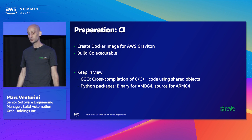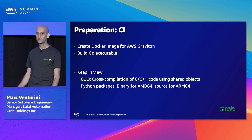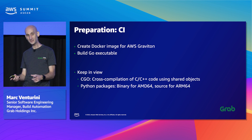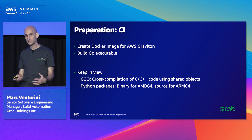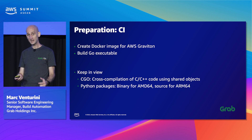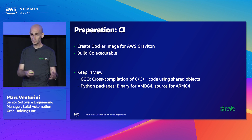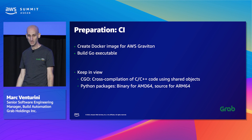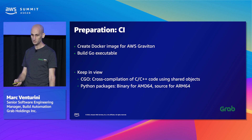Another thing we discovered: we had one Python package that was delivered as a binary for AMD but as source code for ARM. That means if you don't have a toolchain installed in your Docker image — which typically you don't, since you don't want to ship a toolchain to production — you won't be able to build your Docker image for ARM. We had to work around this by installing the toolchain, installing the Python package, and then removing the toolchain. Something to consider if you're doing this migration yourselves.